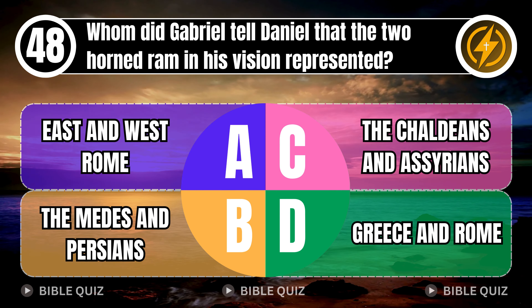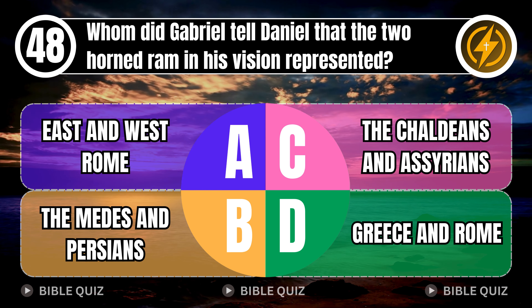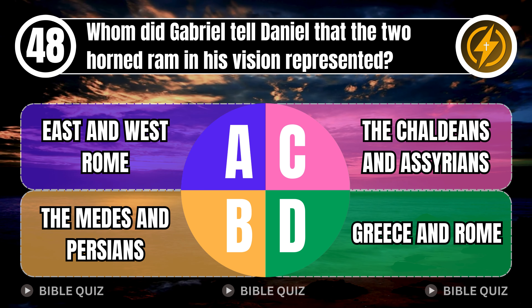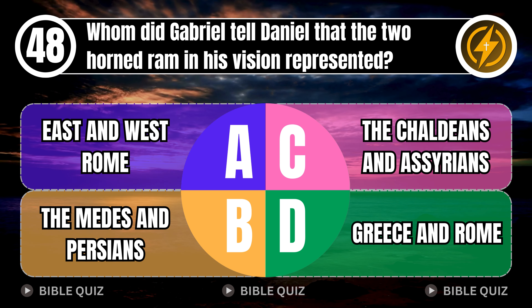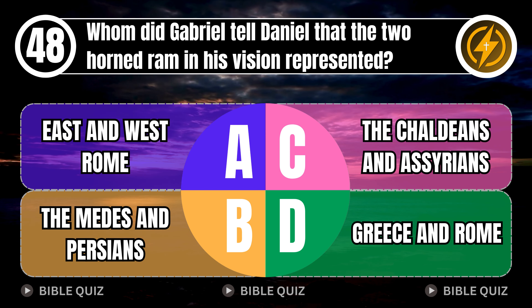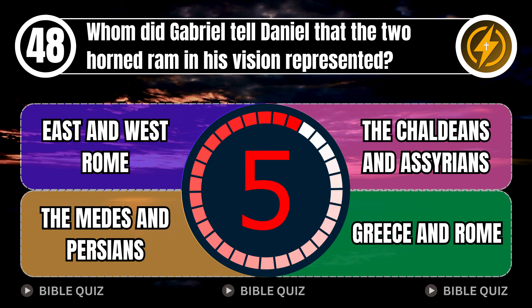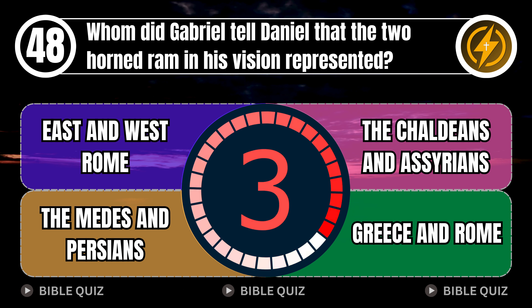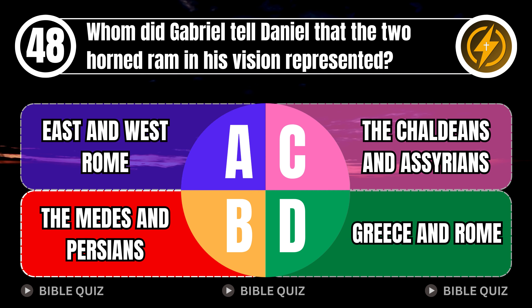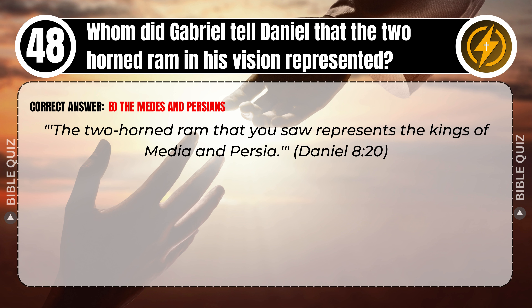Question 48: Whom did Gabriel tell Daniel that the two-horned ram in his vision represented? A. East and West Rome. B. The Medes and Persians. C. The Chaldeans and Assyrians. D. Greece and Rome. Correct answer: B. The Medes and Persians. The two-horned ram that you saw represents the kings of Media and Persia. Daniel 8 verse 20.